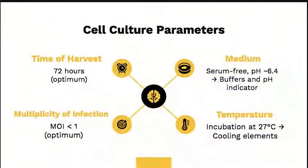SF9 cells are grown in a suspension serum-free medium with a pH around 6.4 and incubation temperature of 27 degrees Celsius, which can be monitored by pH indicators and installation of cooling elements. The optimum time of harvest in VLP synthesis is around 72 hours, with optimum MOI less than 1 as parameters for the cells after infection.